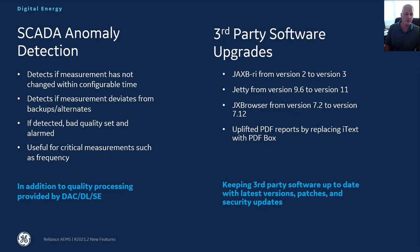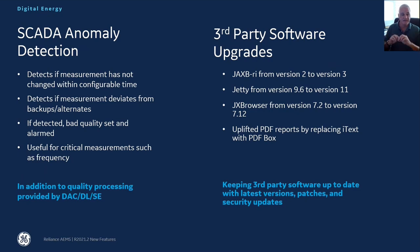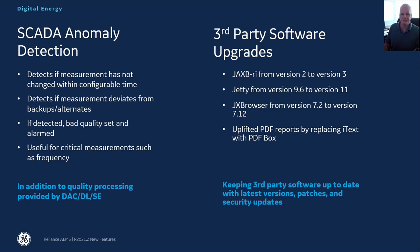As a corollary, we also detect if, in a set of prime and backup measurements, there is excessive deviation. For example, when looking at frequency across the system, you would expect all measurements to be fairly close to each other unless there's an islanding situation. This checks prime and backup or alternate measurements to make sure the deviation is within acceptable limits. If the deviation exceeds those limits, it will be alarmed, and the measurement that deviates the most will be selected and have a bad quality applied. This is primarily for measurements such as frequency or tie line type data, and is in addition to our standard SCADA processing, data acquisition control, and state estimation where we already detect abnormal measurements.